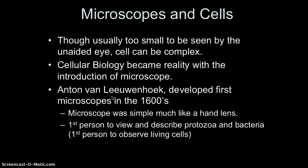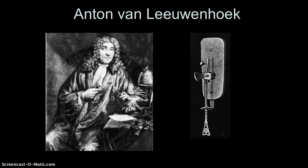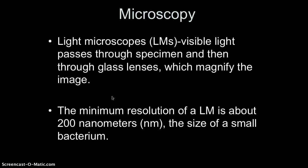Technically, Anton von Leeuwenhoek could go down in history as the first person to observe living cells, though at that time he did not know what cells were. Here is a picture of Anton von Leeuwenhoek and his simple microscope. In class we use the light microscope: visible light passes through the specimen — the tissue sample or whatever you have on the slide — and then through the glass lenses which magnify the image. The minimum resolution of a light microscope is about 200 nanometers, which is about the size of a small bacterium.